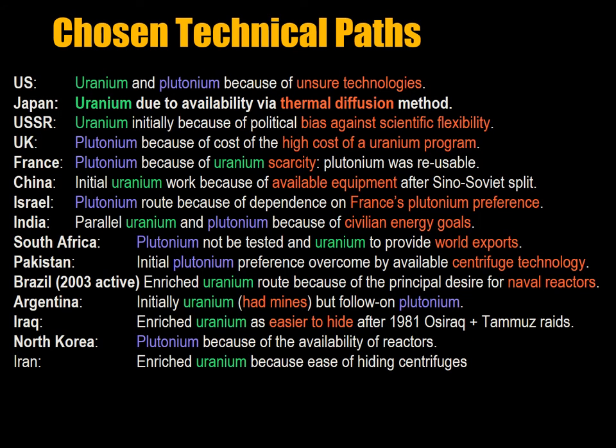Here's a list of different technical paths chosen by different countries. The US chose both the uranium and the plutonium path because they were unsure of the technology and had a lot of resources, so they explored almost every single avenue and almost every single weapons design. Japan, which had a very preliminary nuclear weapons program, followed uranium because of availability via the thermal diffusion method. The Soviet Union went with uranium initially because of political bias against scientific flexibility — it was decided by the higher-ups.